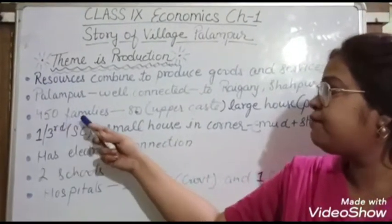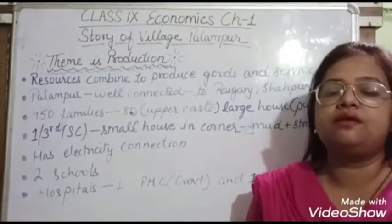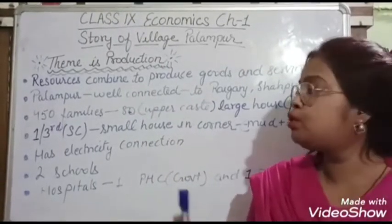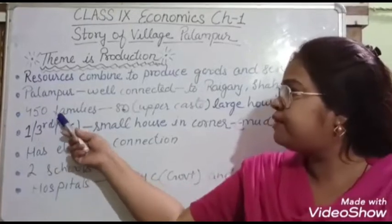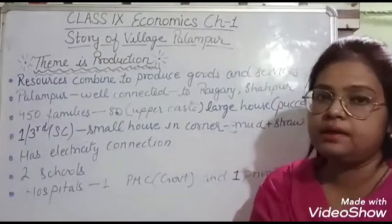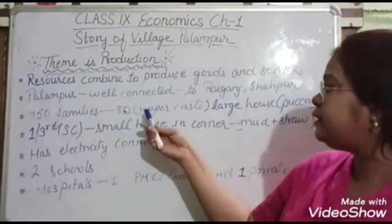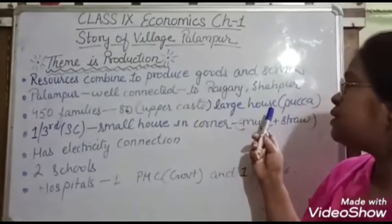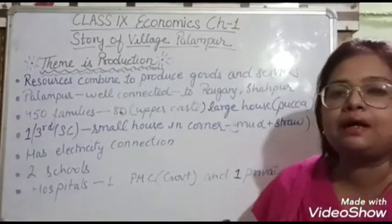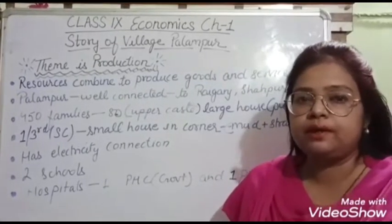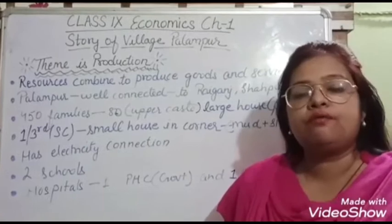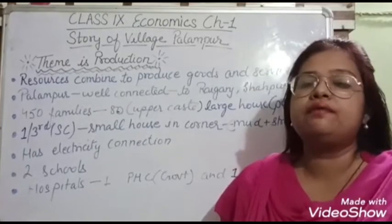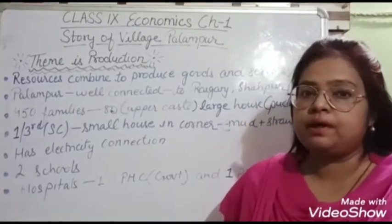The next point: there are 450 families living in the village. Among these 450 families, 80 are upper caste families. These upper caste families are living in large, pucca houses — cemented, well-built houses made of brick — because they are rich and have many facilities.